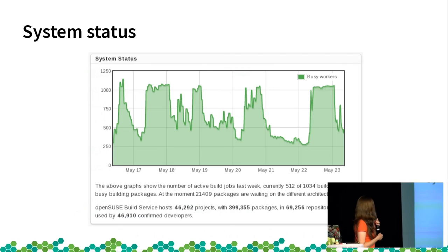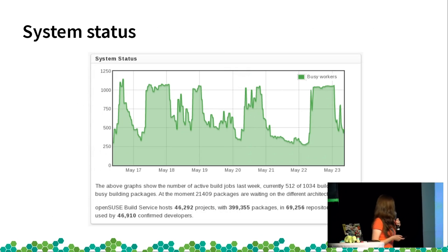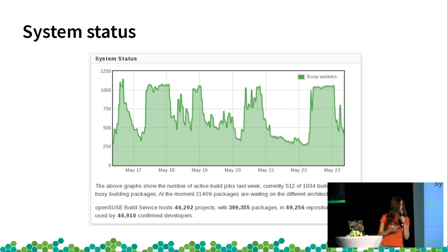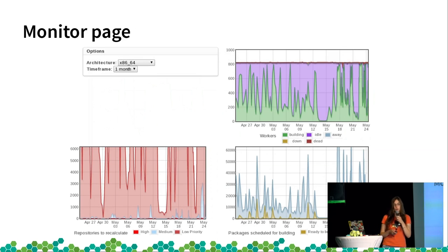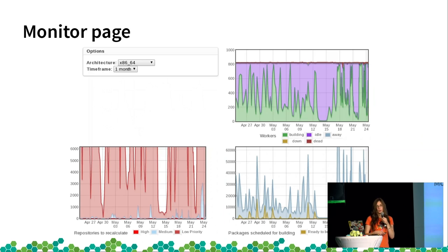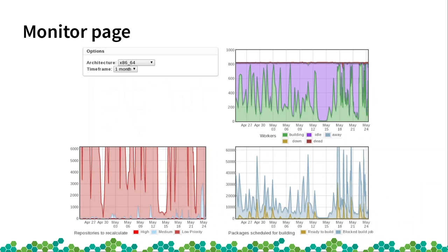Also on our main page we have the system status — the number of build jobs during the last week, and it also tells you how many build hosts and packages are waiting. In our monitor page you can also see how many workers are building, how many are dead, down, or away, and how many packages are waiting to be built or are blocked. Selecting one month here, you can probably remember that OBS was down several days around two weekends ago — that's why we have this gap here.